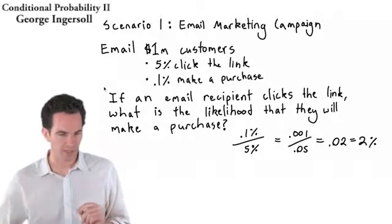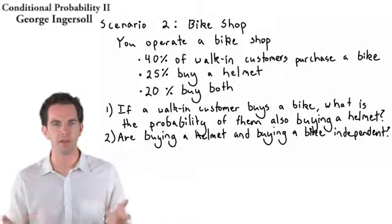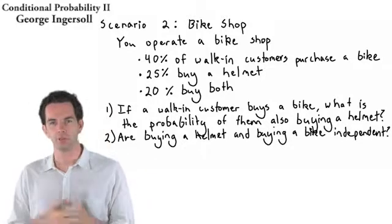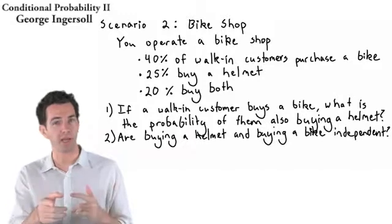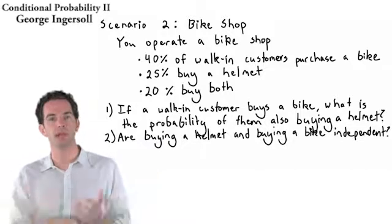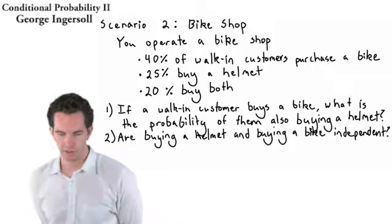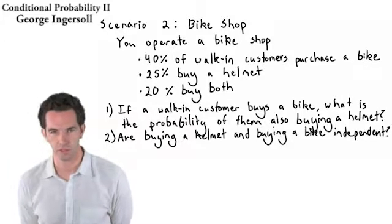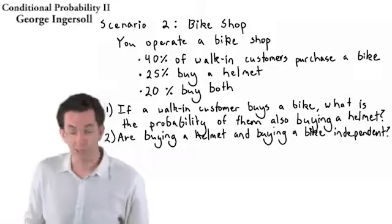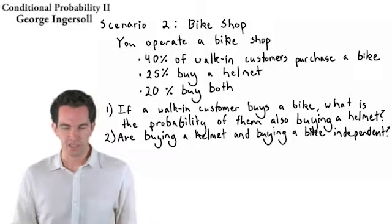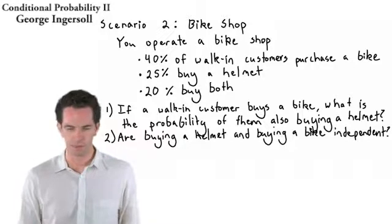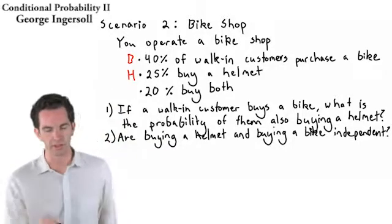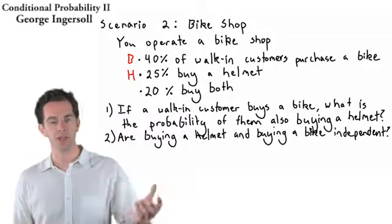Let's move on to our next scenario, which deals with a bike shop. You operate a bike shop, and you know that 40% of customers who walk in will purchase a bike, 25% will buy a helmet, and 20% will buy both a helmet and a bike. We'll call buying a bike event B, buying a helmet event H, and the 20% buying both is the intersection of B and H. The first question is: if a walk-in customer buys a bike, what is the probability of that customer also buying a helmet?